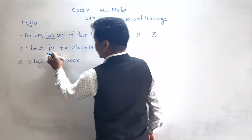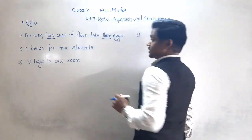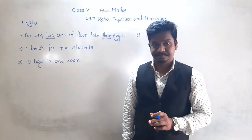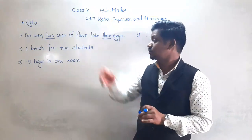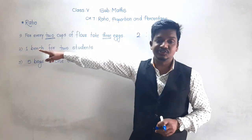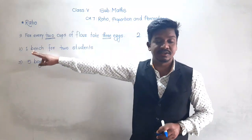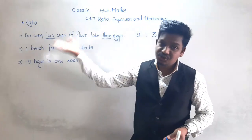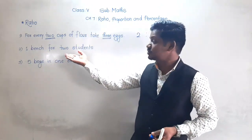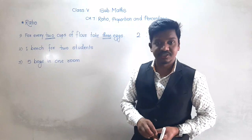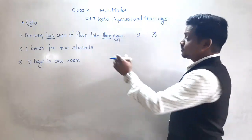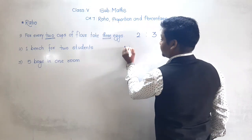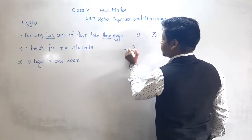Second example: 1 bench for 2 students. For 2 students, how many benches are required? 1 bench. Then if there are 4 students, then 2 benches. If there are 10 students, then 5 benches. So this is the basic - 1 bench for 2 students.